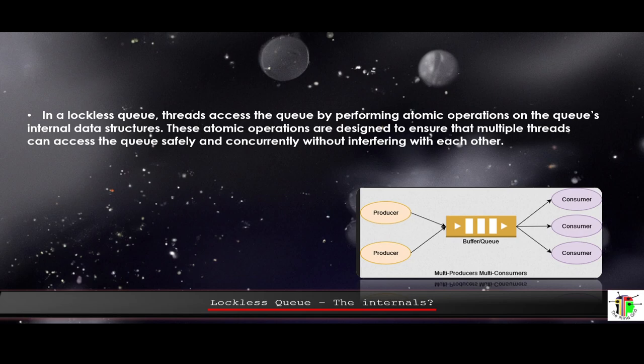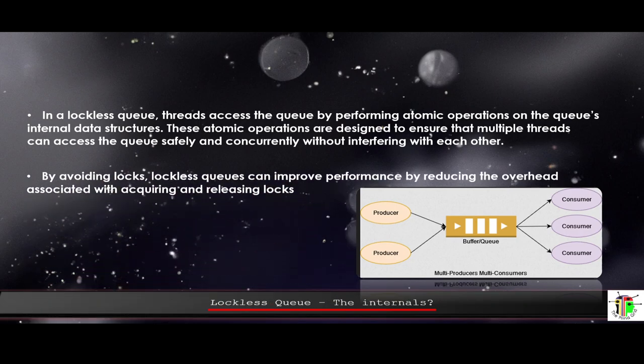The first thing is that we need atomic operations. The second thing is that by avoiding locks in lockless queues, we can improve performance by reducing the overhead associated with acquiring and releasing locks. There's still some contention that needs to be resolved, but we are able to do that without using a lock, which can be a more expensive mechanism.